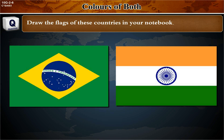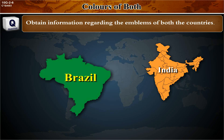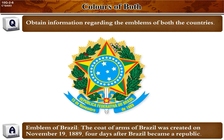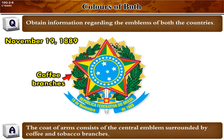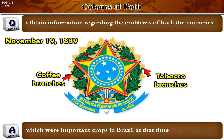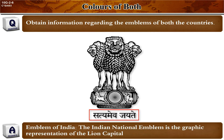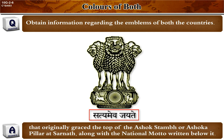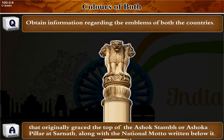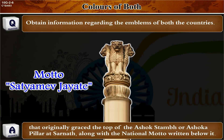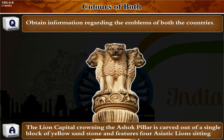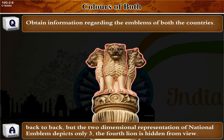Draw the flags of these countries and obtain information about their emblems. The coat of arms of Brazil was created on November 19, 1889 — four days after Brazil became a republic — and consists of a central emblem surrounded by coffee and tobacco branches. The Indian national emblem is the graphic representation of the Lion Capital of Ashoka's pillar at Sarnath, carved from a single block of yellow sandstone, featuring four Asiatic lions back to back, though only three are visible in the two-dimensional representation.